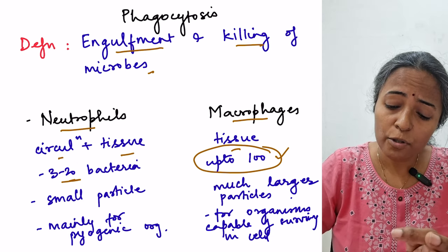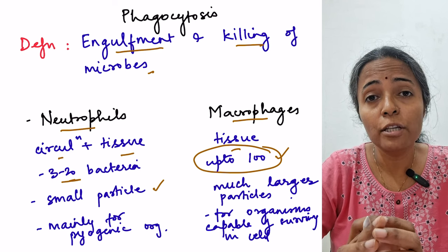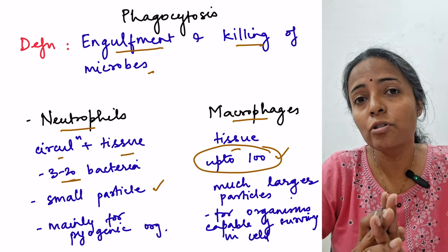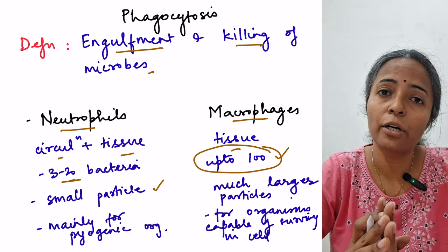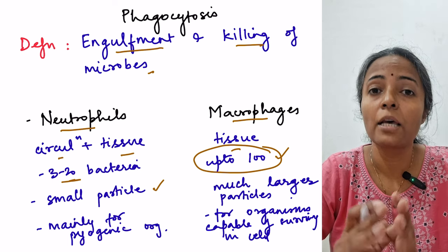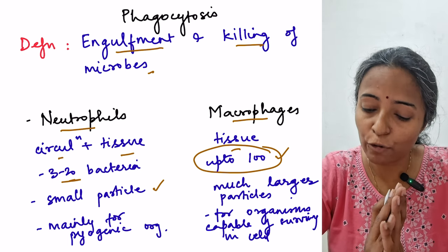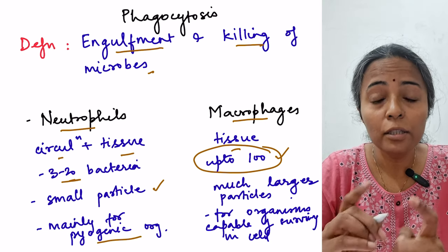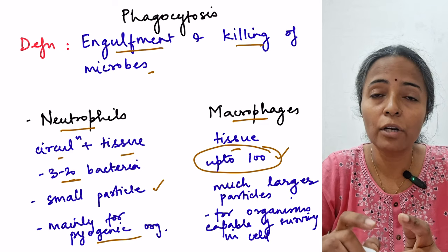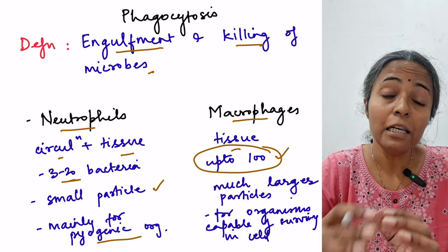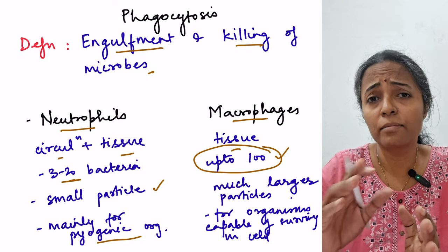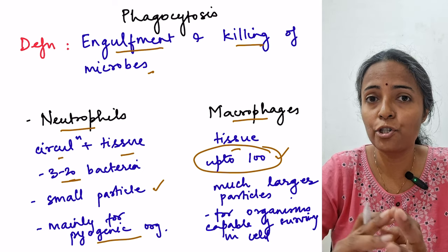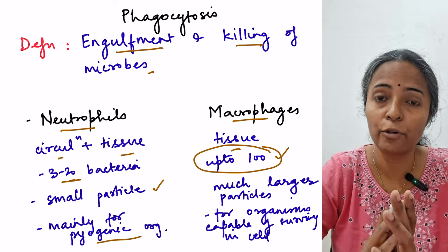Neutrophils phagocytose small particles, while macrophages can phagocytose even larger particles, for example red blood cells. Macrophages also phagocytose cells undergoing apoptosis. Neutrophils are mainly effective against pyogenic organisms, whereas macrophages are very effective against organisms which can live inside the cell — intracellular organisms.